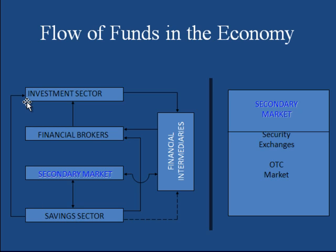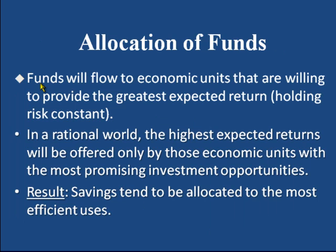In return, the savings sector receives securities from the investment sector, secondary markets, and financial brokers. There is a one-sided flow of funds from savings sector to financial intermediaries when savings sectors keep money in bank accounts, with no securities flowing back. In short, funds will flow to economic units that are willing to provide the greatest expected return, holding risk constant. In a rational world, the highest expected returns are offered only by those with the most promising investment opportunities, so savings tend to be allocated to the most efficient users.